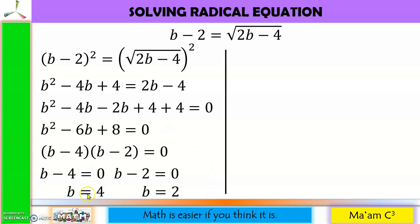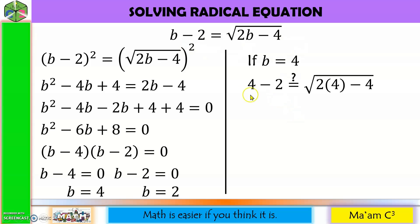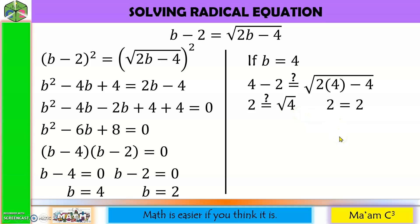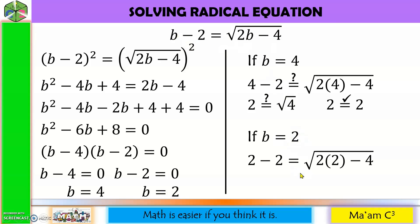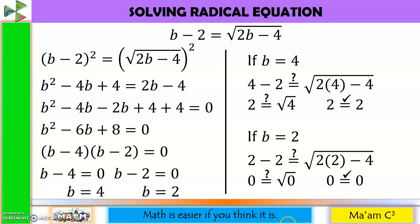Checking b equals 4: substitute 4 in the original equation — 4 minus 2 is 2; 2 times 4 minus 4 is 4, and square root of 4 is 2. So 2 equals 2. Checking b equals 2: 2 minus 2 is 0; 2 times 2 minus 4 is 0, and square root of 0 is 0. So 0 equals 0. Both solutions are correct: b equals 4 and b equals 2.